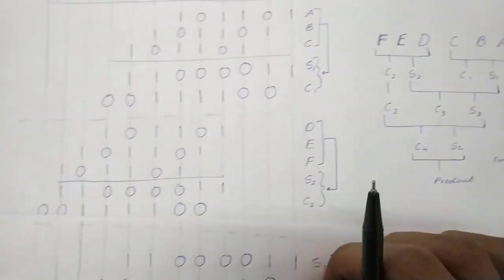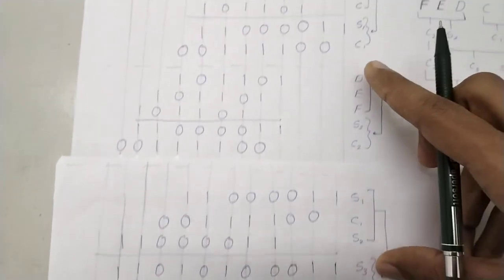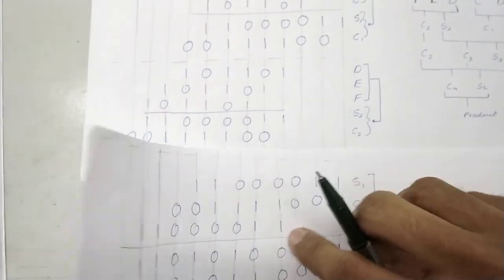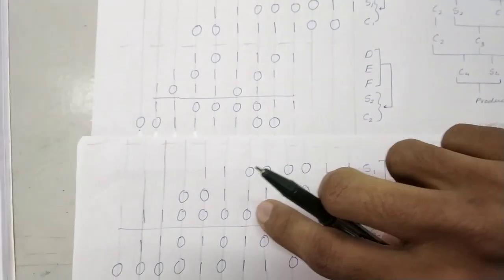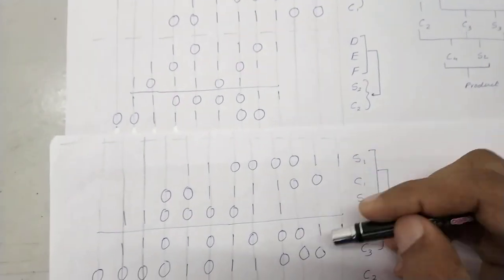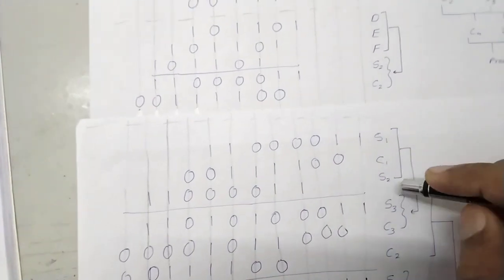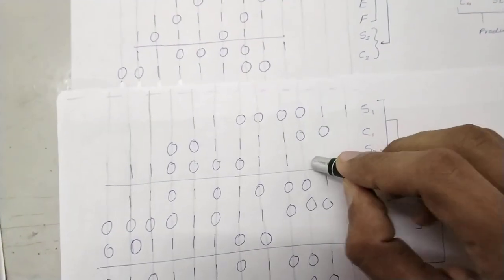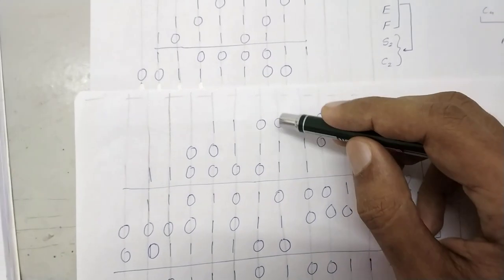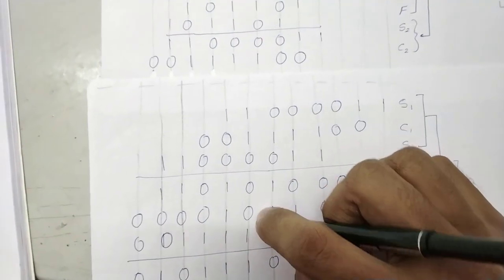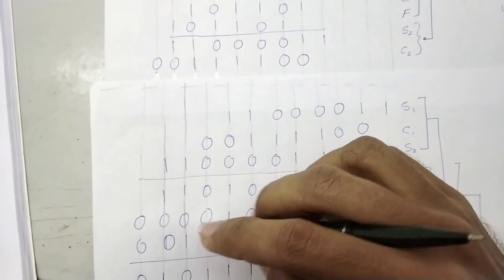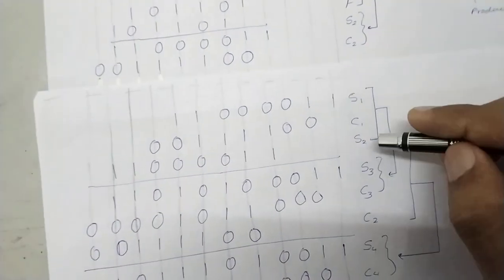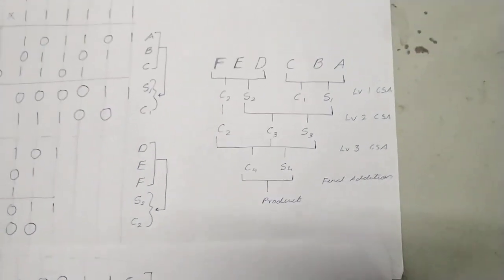Now the roadmap says we have to add s1, c1, and s2. We take s1 and write it in the correct bit positions, then c1 in its correct bit positions, then s2 in its correct bit positions — note it is shifted two places to the left, but using the lines you just place it correctly. After performing the addition we get a new sum vector s3 and a new carry vector c3.